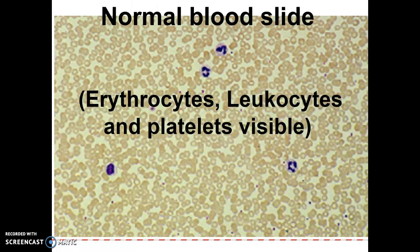Now, a normal blood slide — in your lab you probably saw something like this. It has three neutrophils, a big monocyte, some platelets or thrombocytes, and a whole bunch of erythrocytes. All those little pinkish, orangish, reddish discs are erythrocytes. The leukocytes, or white blood cells: we've got three neutrophils and one big monocyte.